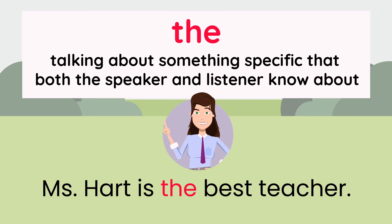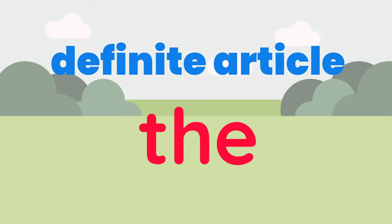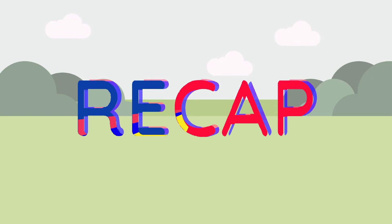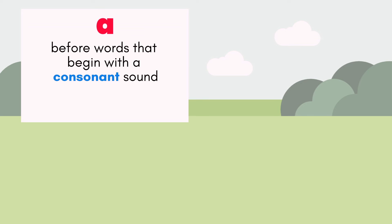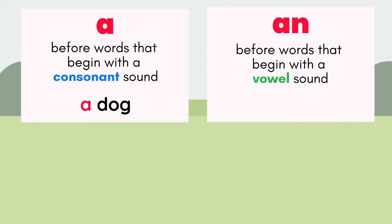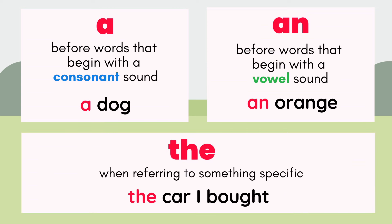Let me know in the comments if you'd like me to make a video just on the definite article, the. Alright, let's recap. Use a before consonant sounds, like a dog. Use an before vowel sounds, like an orange. Use the when referring to something specific, like the car I bought.